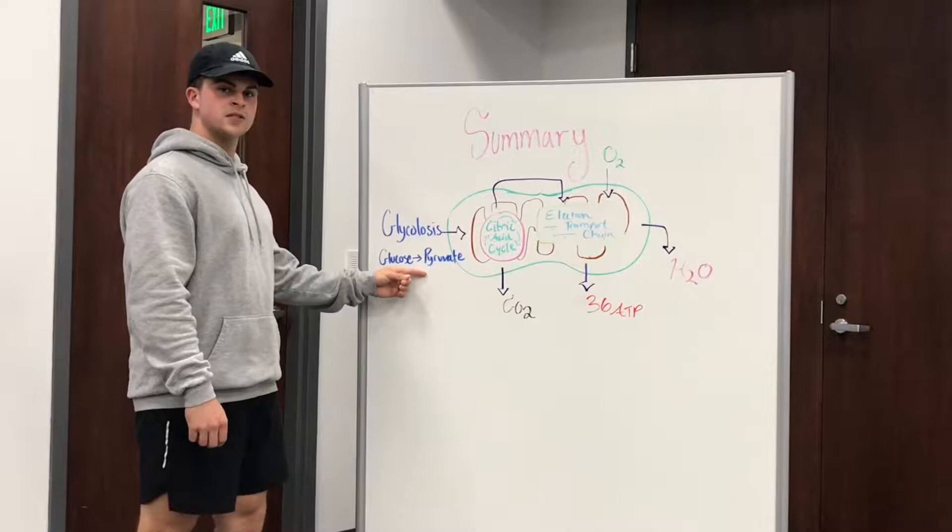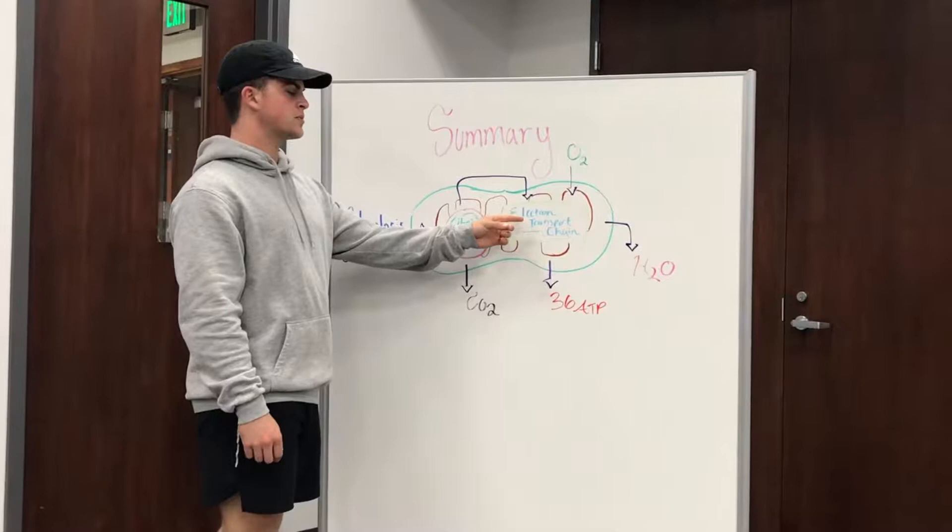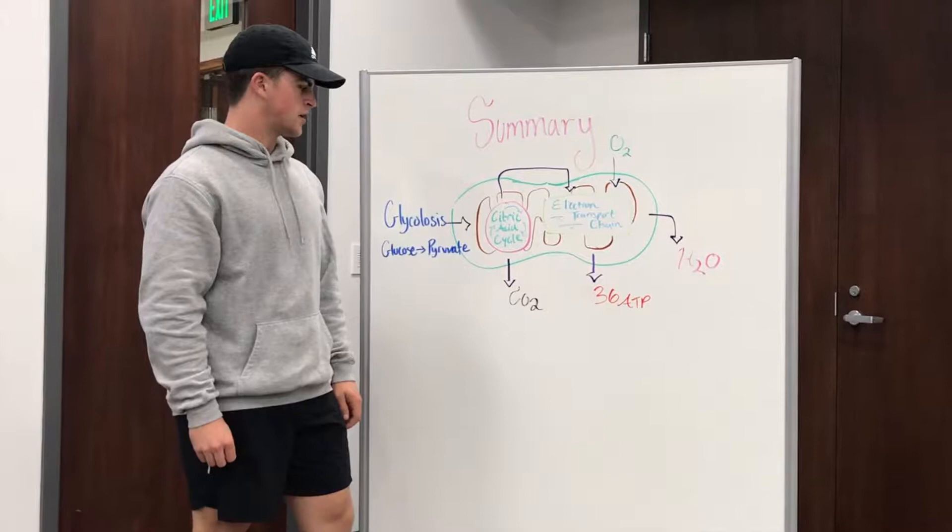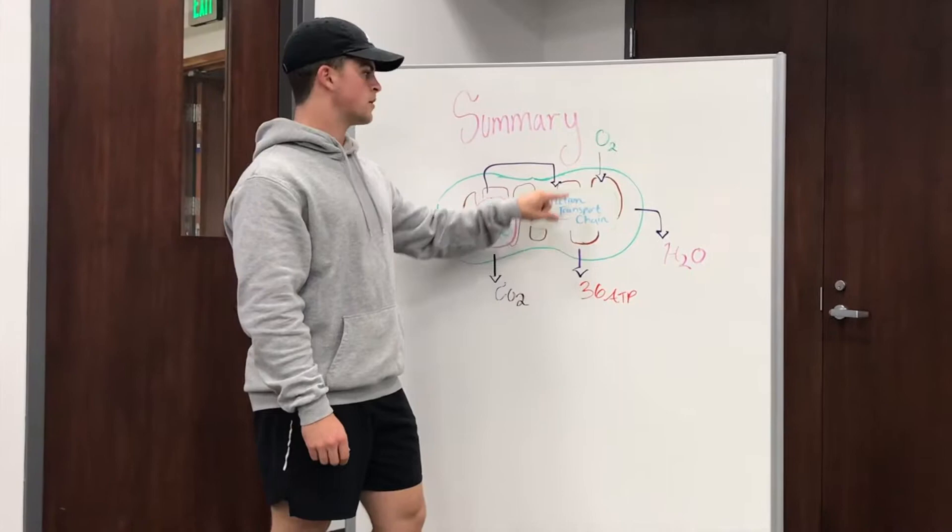Notice that glycolysis occurs in the cytosol outside the mitochondria, and the citric acid cycle and electron transport chain occur inside the mitochondria. The outputs of each process are listed here. For the electron transport chain, oxygen goes in and combines with electrons to form water. The ATP made from these processes helps Kingsley power his body.